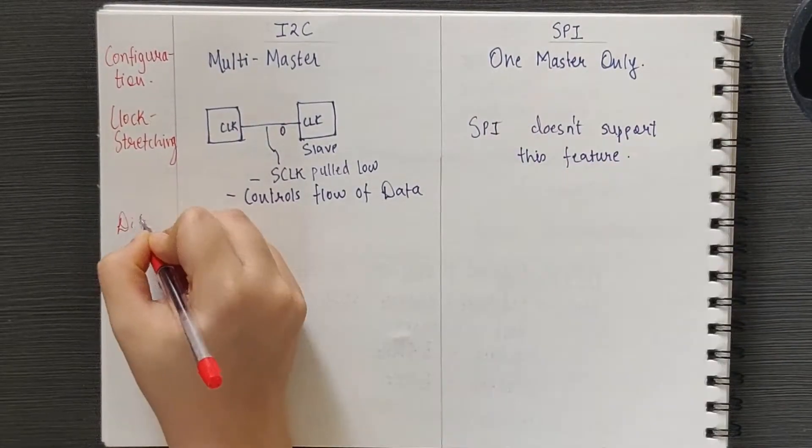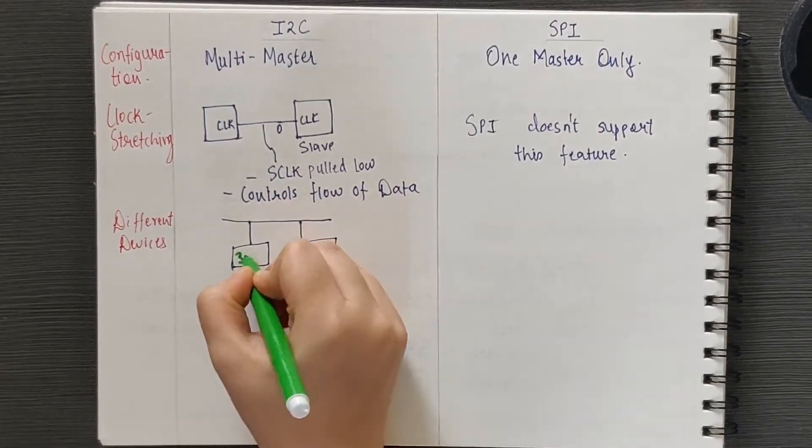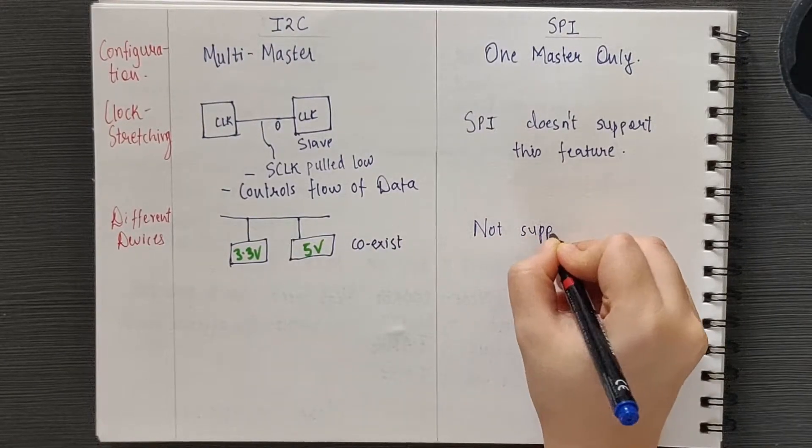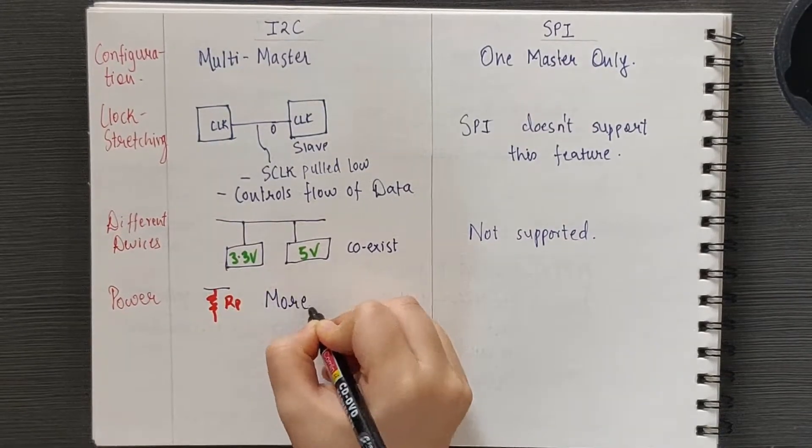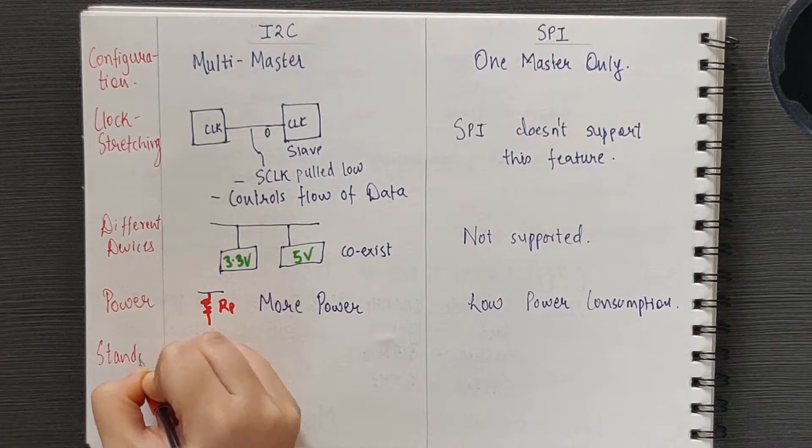Due to the open drain, devices with different supply voltages like 5V or 3.3V can coexist on the same bus. Such a thing is not possible in SPI. I2C draws more power as compared to SPI due to the presence of load resistor in its design.